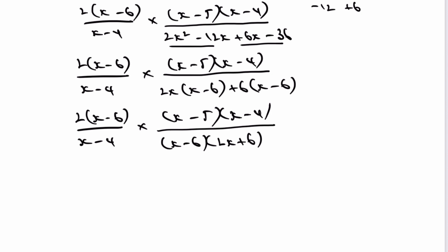OK, so now I'm in the excellent position where I can start to simplify this particular fraction. OK, so let's have a look. Well, I've got x minus 4. I can divide through top and bottom by x minus 4. And then I've got x minus 6, top and bottom, x minus 6. And what that leaves me is 2 multiplied by x minus 5, all divided by 2x plus 6.